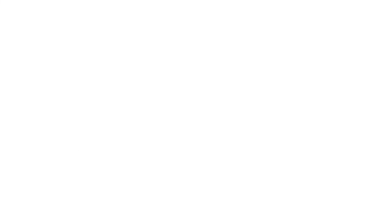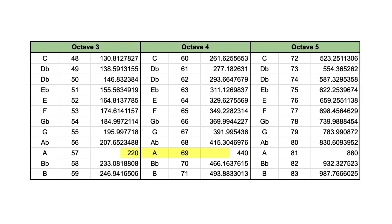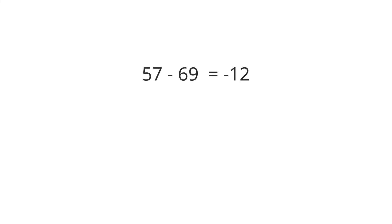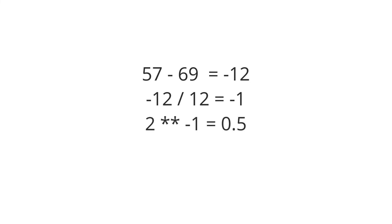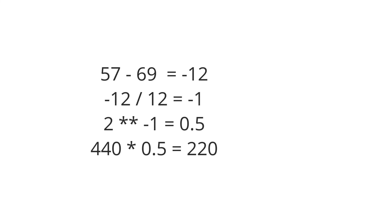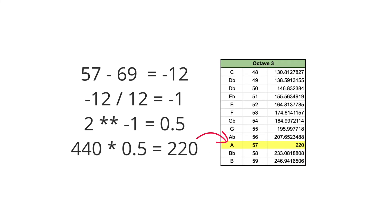Similarly, if we try to get the frequency for MIDI number 57, which we know is the A in the octave below: 57 minus 69 is minus 12. Minus 12 divided by 12 is minus 1. 2 to the power of minus 1 is 0.5. And 440 times 0.5, or divided by 2, is 220 — which is half of 440, and also correct.